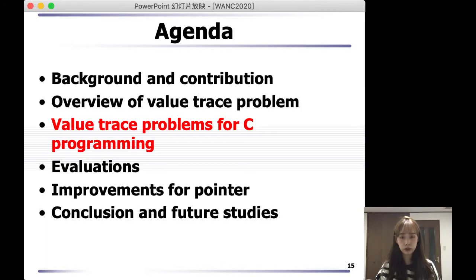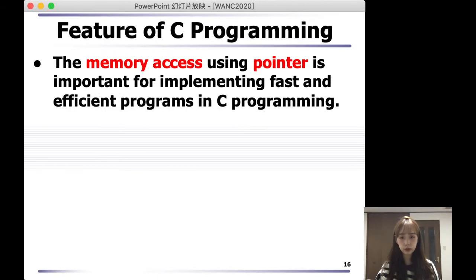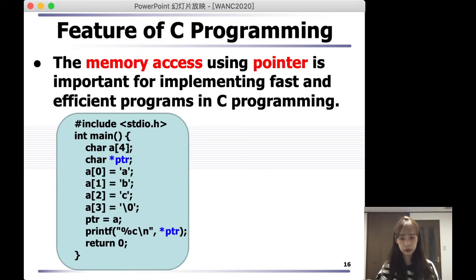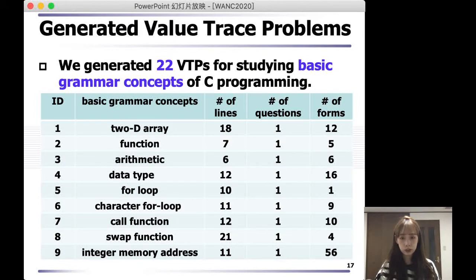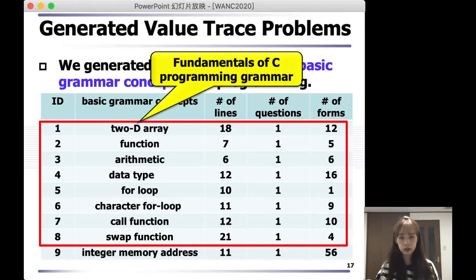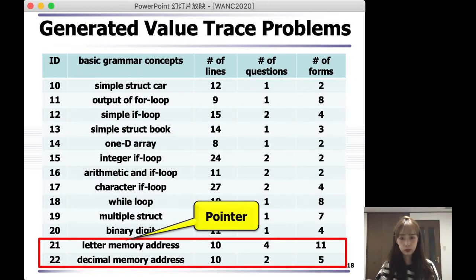Now I'm going to talk about the various problems for C programming. Memory access using pointer is important for implementing fast and efficient programs in C programming. Here is an example of pointer use in C programming. We generated 40 VTPs in total. This graph shows you 22 VTPs for studying basic grammar concepts generated in this paper. From instance 1 to instance 8 are the fundamentals of C programming grammar. Instances 21 and 22 cover letter memory address and decimal memory address, which are important topics of C programming pointer.